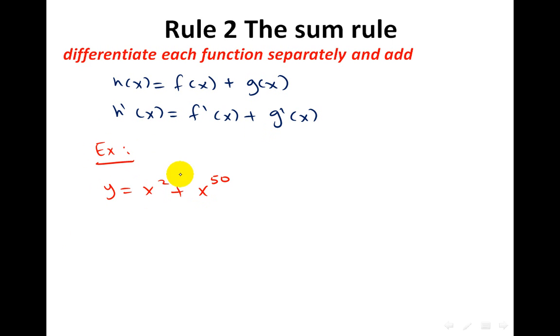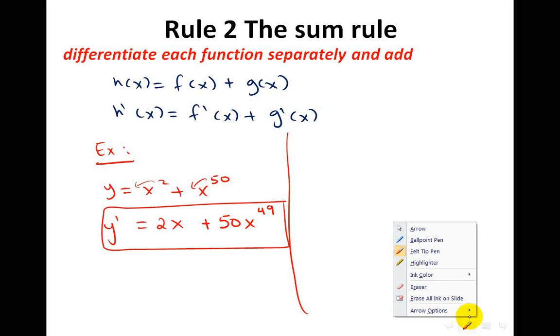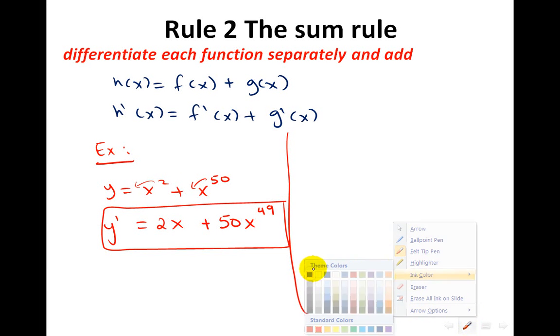Let's say y equals to x squared plus x to the power of 50. So, once you want to differentiate this one, take the 2 down to be 2 times x to the power of 1. You differentiate the first one alone, then also the second one by itself. Take the 50 down to be 50x to the power of 49. So, this will be your sum. This is the final answer.